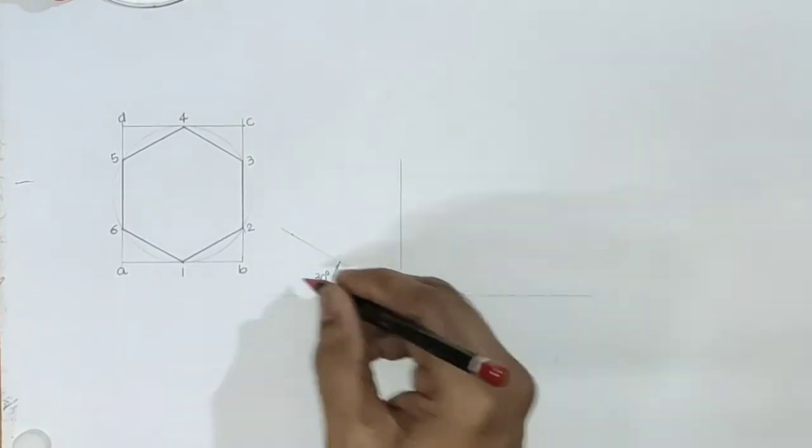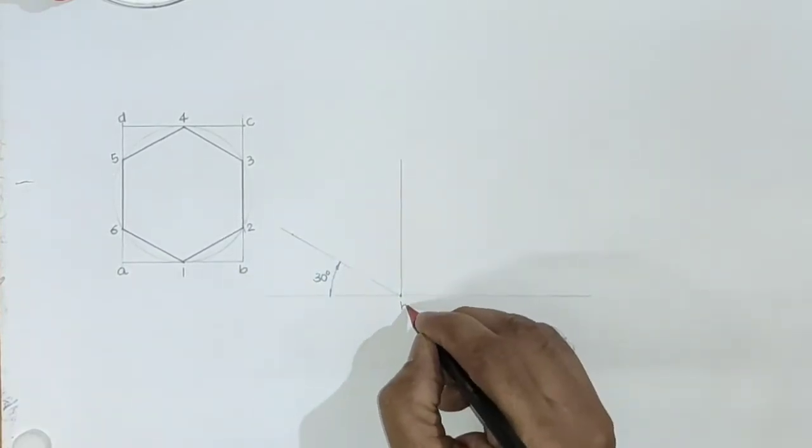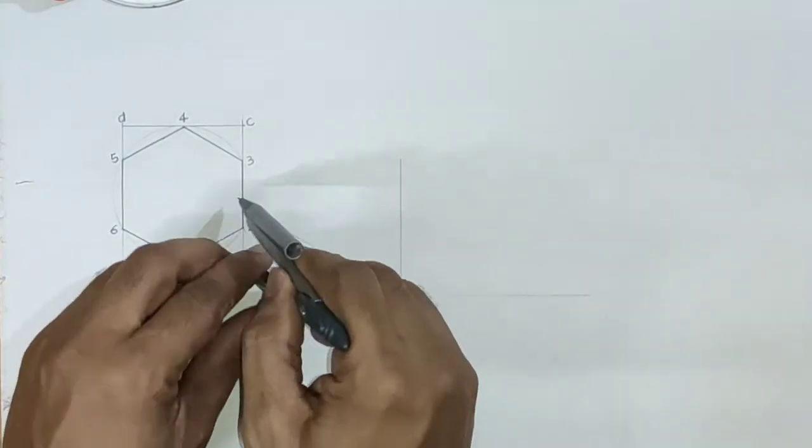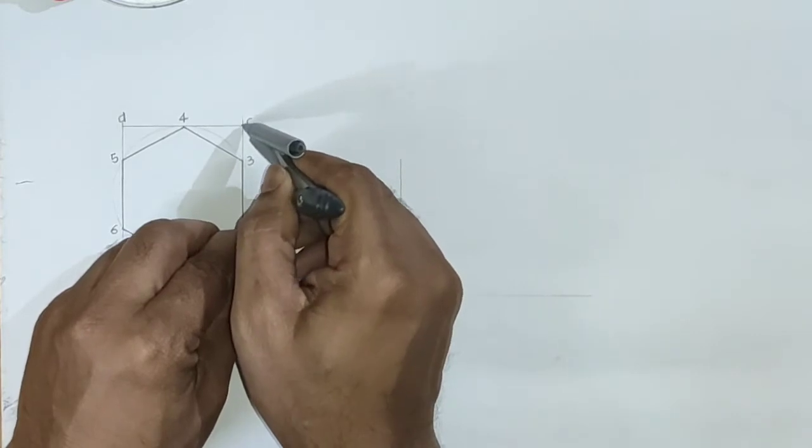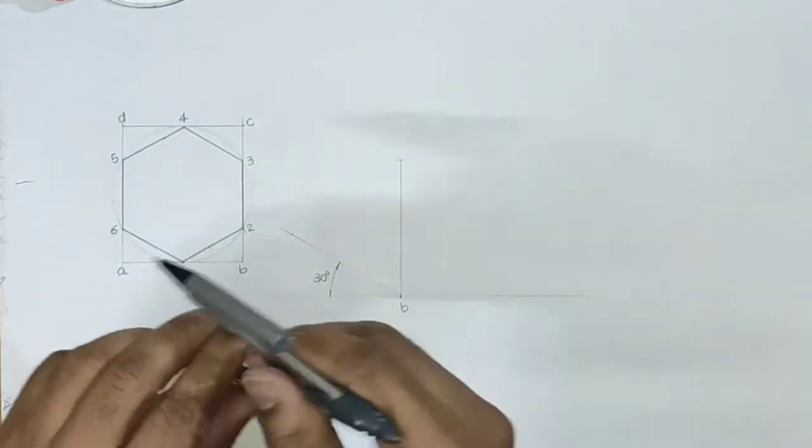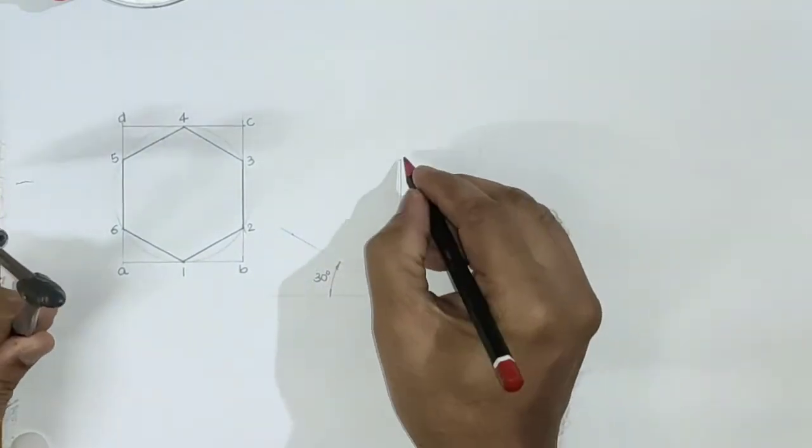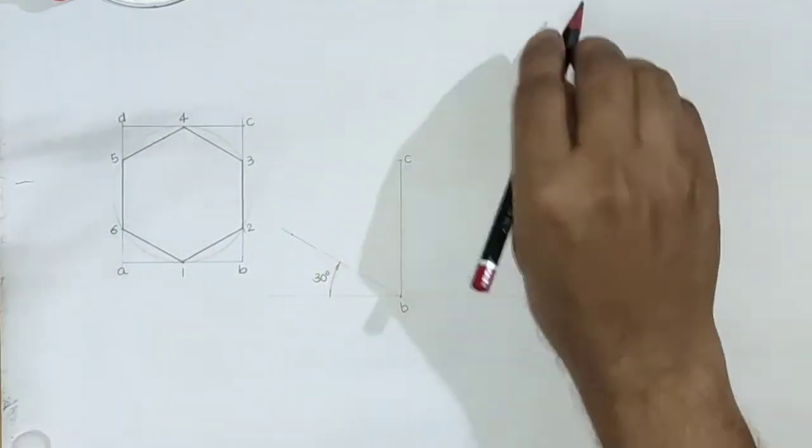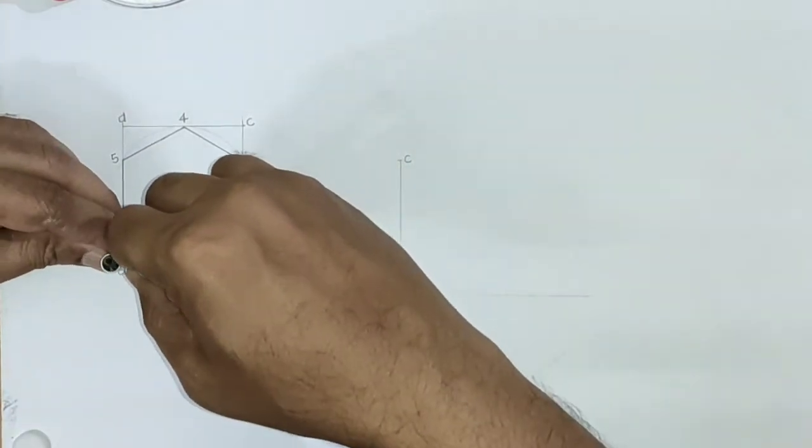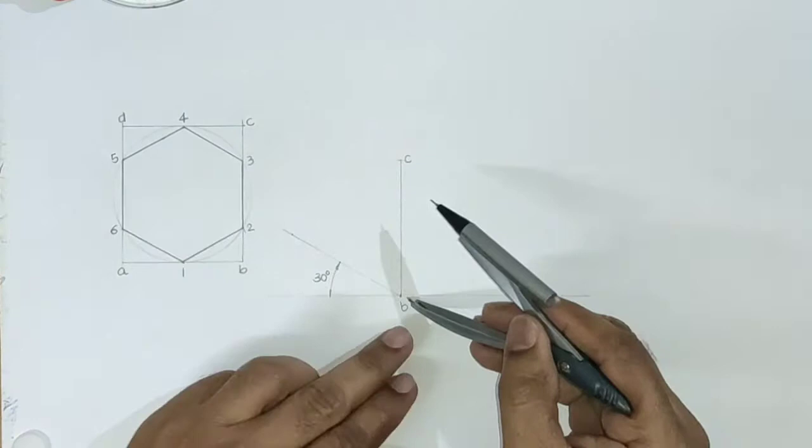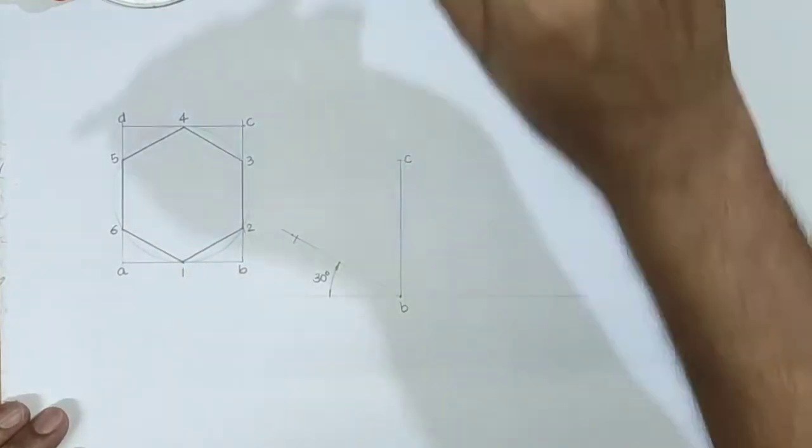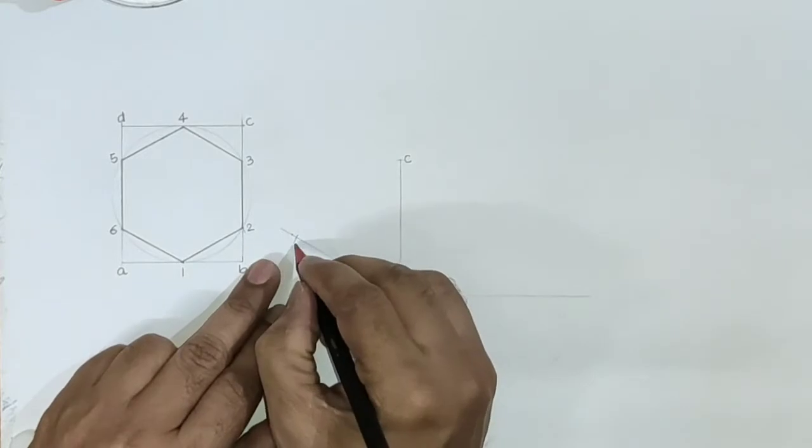If you take this point as B, then let us transfer side BC along vertical line, so this point is C. And let us transfer side AB along 30 degree line, so this point is A.